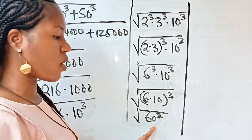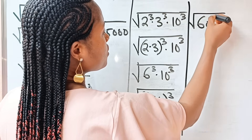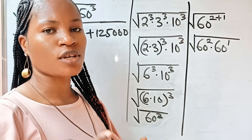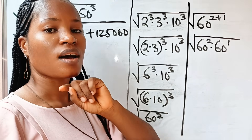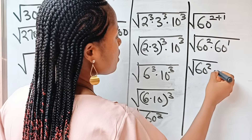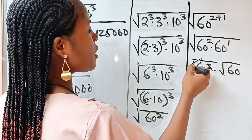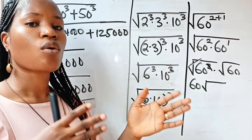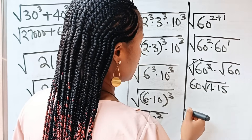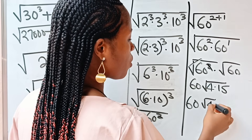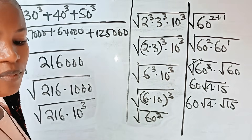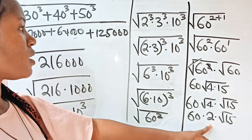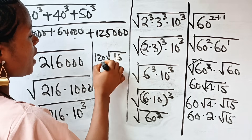We can express this as square root of 60 raised to the power of 2 plus 1, which we write as square root of 60 squared multiplied by 60 to the power of 1, according to the law of exponents. So this is square root of 60 squared multiplied by square root of 60. The square root of 60 squared cancels, leaving us 60 root 60. We have already simplified root 60 in the first method and got root 4 times root 15, which equals 2 root 15. So we get 60 multiplied by 2 multiplied by root 15, giving us 120 root 15, just like in the first method.